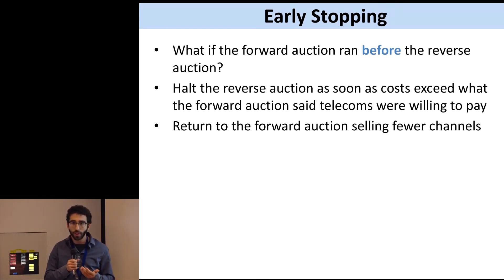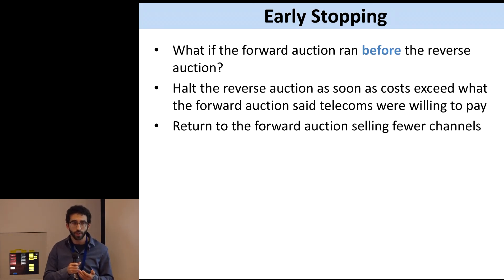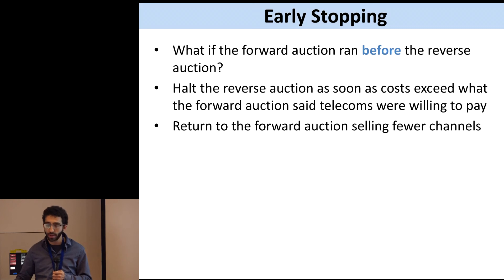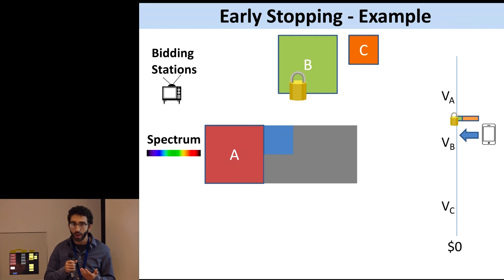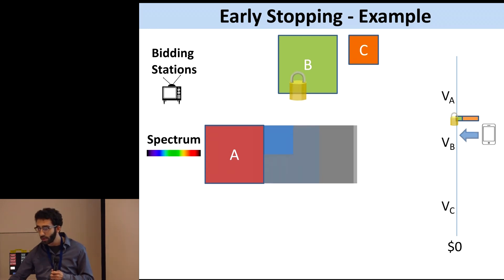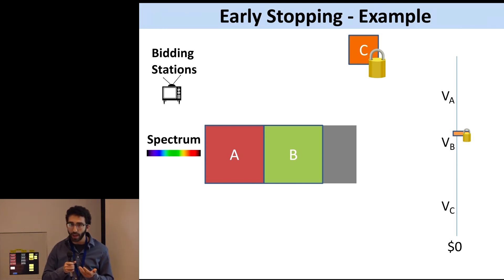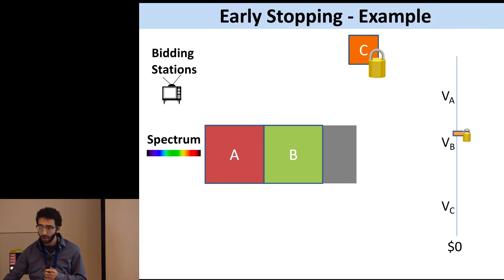If there is such a cost to this multi-stage approach, is there anything we can do to lessen the penalty? One new idea is: what if you ran the forward auction before the reverse auction? Then during the reverse auction, you could stop at any point you realized you were going to sell the spectrum for more money than the telecom companies were willing to pay, and just go back to the forward auction selling fewer channels. In our example, as soon as B froze you'd know you'd have to pay that amount; if you knew the telecom companies wouldn't pay that much, you could stop the auction right there, run another forward auction for the larger set of spectrum, and then let B exit the auction at a cheaper price.